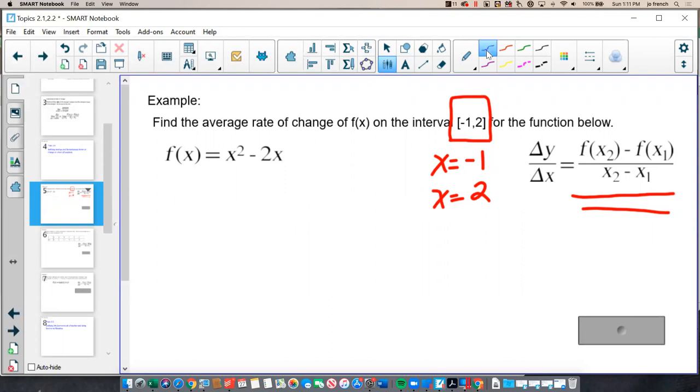So at negative 1, if I plug negative 1 into my equation, and then I will plug 2 also into my equation so that I can calculate my average rate of change, the slope of my secant line. So at negative 1, I get negative 1 squared minus 2 times negative 1, which means I get 1 plus 2 or 3.